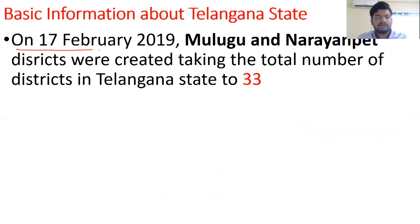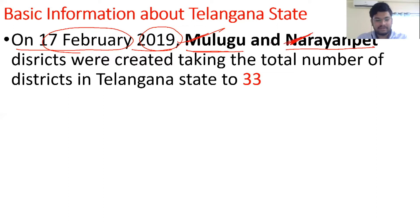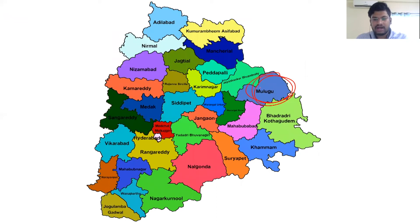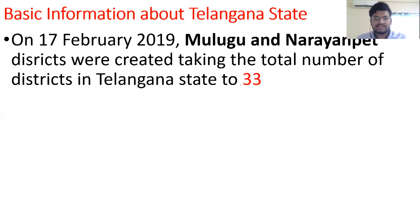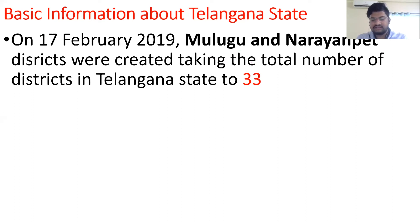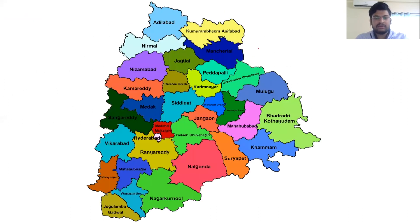On 17th February 2019, two new districts were added: Mulugu and Narayanpet. The total number of districts in Telangana as of now is 33. You should have clear awareness about the location of each district and its bordering districts within the state.